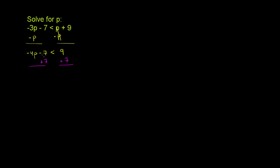Negative 7 plus 7 cancel out, and all we're left with is negative 4p. On the right-hand side, we have 9 plus 7 is 16. And it's still less than.